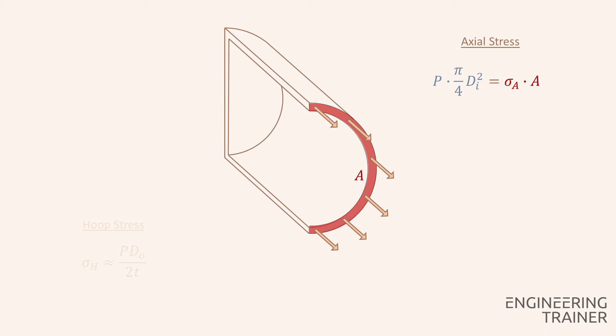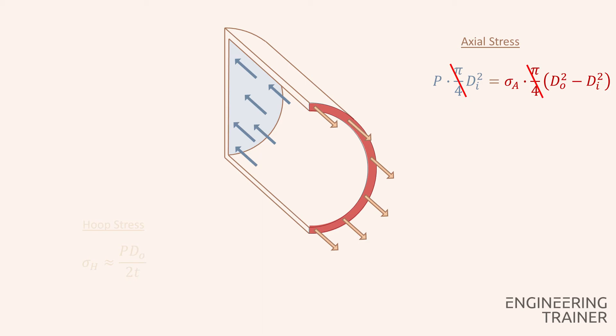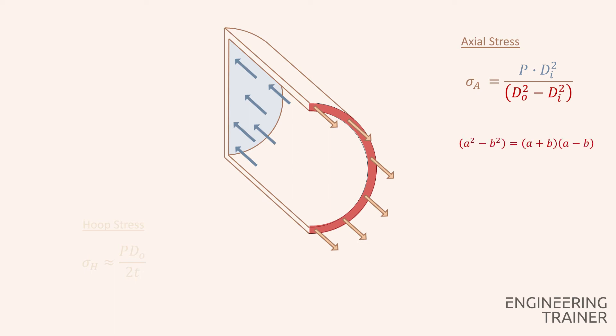This cross-sectional area is formed by considering the full circle based on the outside diameter minus the full circle based on the inner diameter, and is calculated as pi over 4 times the square of the outer diameter minus that of the inner diameter. In this expression for our force balance we can cross off the factor of pi over 4 since this is present on both sides and we reorganize the equation to single out the axial stress. To simplify this equation we use the following basic expression stating that A squared minus B squared is equal to A plus B times A minus B.